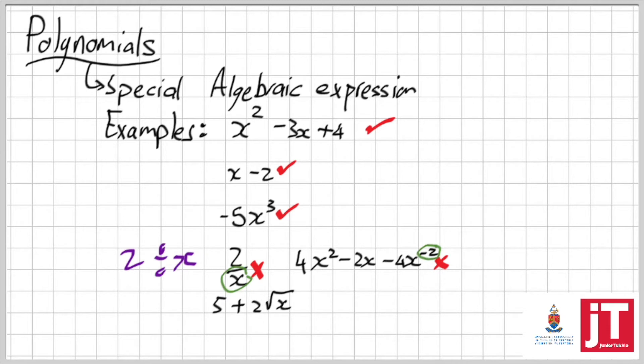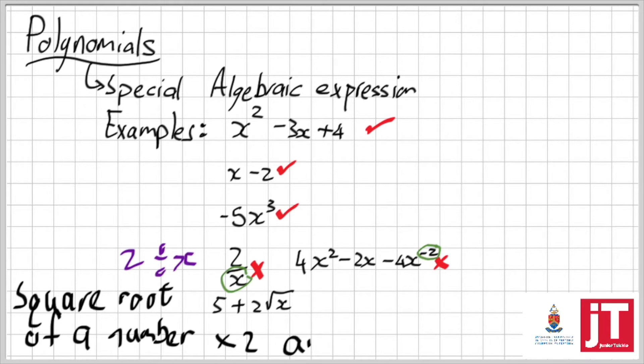If I had to write this as an algebra sentence, how would it be? I would say, well, the square root of a number multiplied by 2 and add 5. That would be the full sentence that leads to this algebraic expression.